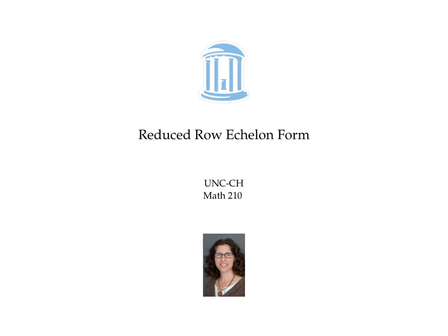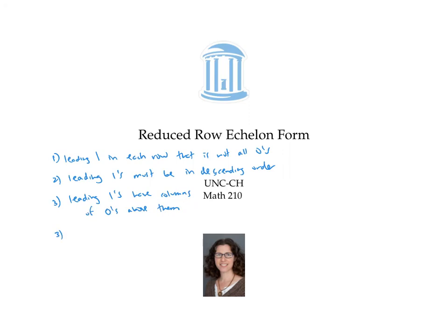In this video, we introduced an especially nice form for a matrix called reduced row echelon form. To be in reduced row echelon form, a matrix must have a leading one in each row that is not entirely zeros, the leading ones must be in descending order, the leading ones must be topped by columns of zeros, and any all-zero rows must go at the bottom. In a future video, we'll practice getting matrices into reduced row echelon form using an algorithm called Gaussian elimination.